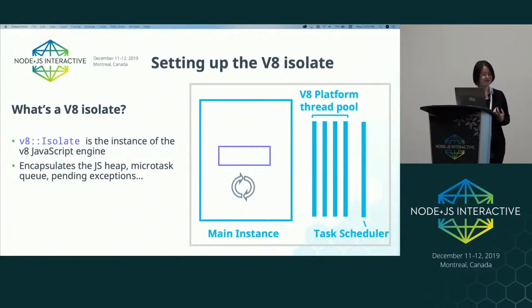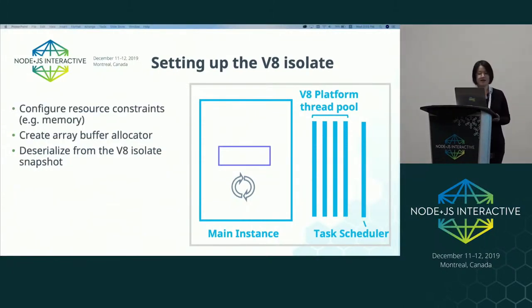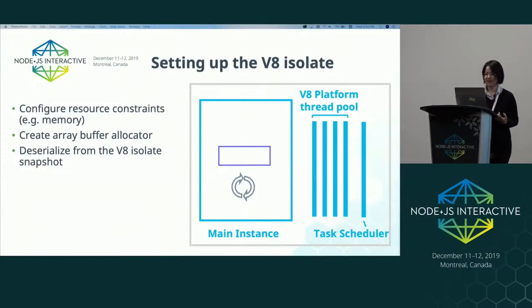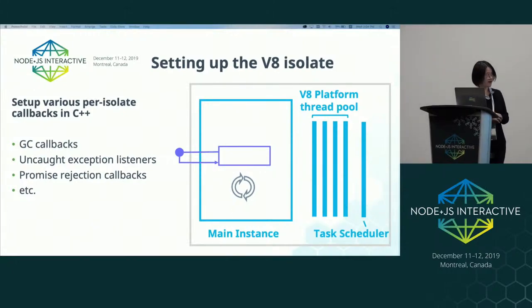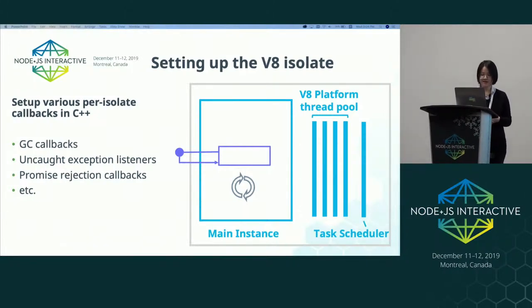V8 isolates are the instances of the V8 JavaScript engine. It encapsulates, for example, a JavaScript heap, a microtask queue for promises, and pending exceptions and so on. To set up the V8 isolate, we will first configure the resource constraints, including how much memory this V8 engine instance can use. We'll also create an array buffer allocator that is in charge of allocating external memory for buffers and other typed arrays. Then V8 will deserialize the isolate from an isolate snapshot — we'll cover snapshots later. Then we'll set up several per-isolate callbacks in C++, but most of them are not ready to be called at this point because they will have to work with JavaScript callbacks initialized later. So these include the garbage collection callbacks, uncaught exception listeners, promise rejection callbacks, et cetera.